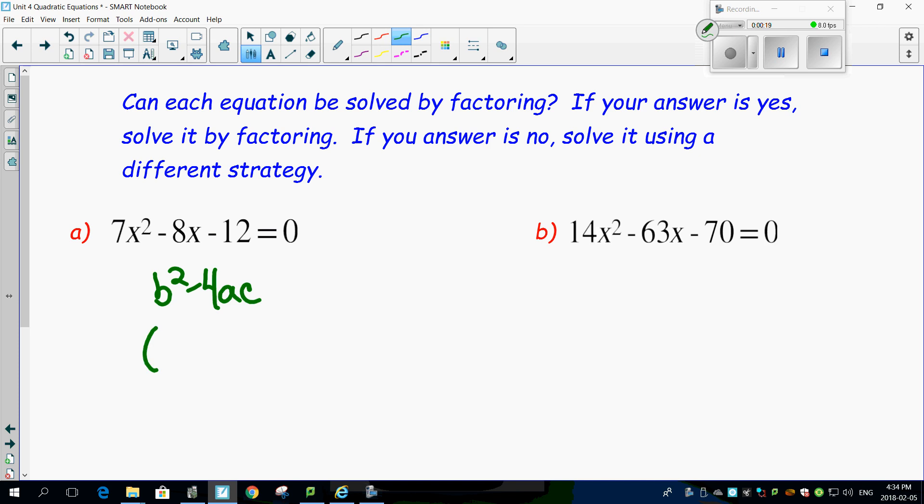B squared minus 8 squared minus 4 times 7 times c, which is minus 12. Let's figure out the numbers here. This is going to be 64. Subtract a negative times a negative, which is going to make this a positive.